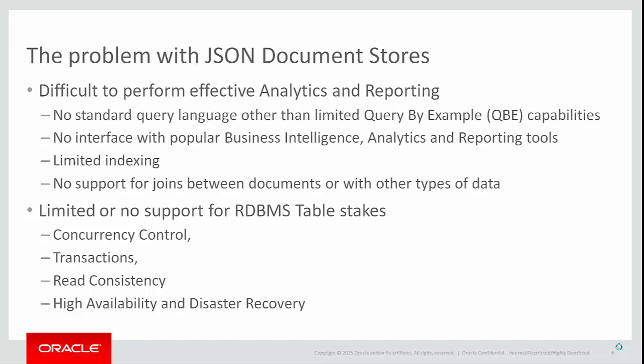Some NoSQL document stores may provide limited support for in-memory joins between data stored in a single document, but none of them have the ability to support joins across documents or across collections, let alone joining data in JSON documents with other kinds of data that your organization has to manage.